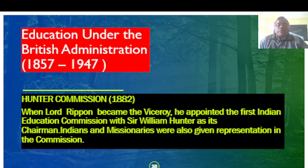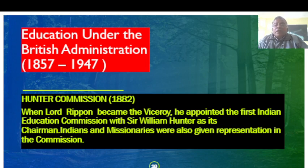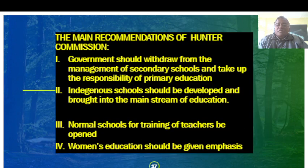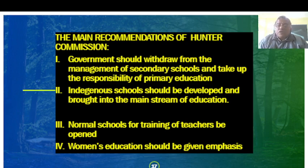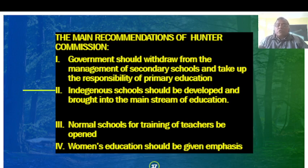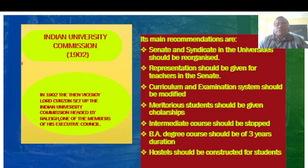Next, let us discuss the Hunter Commission — education under British administration. For the first time, during the Hunter Commission, education became the direct responsibility of the British government under the British Parliament. When Lord Ripon became the Viceroy, he appointed the first Indian Education Commission with Sir William Hunter as its chairman. Indians and missionaries were also given representation. Main recommendations: government should withdraw from management of secondary schools and take responsibility for primary education; indigenous schools should be developed and brought into the mainstream; normal schools for training of teachers should be opened; and women's education should be given emphasis.